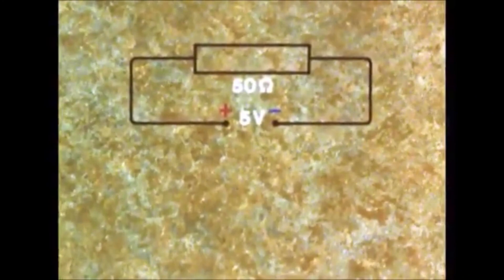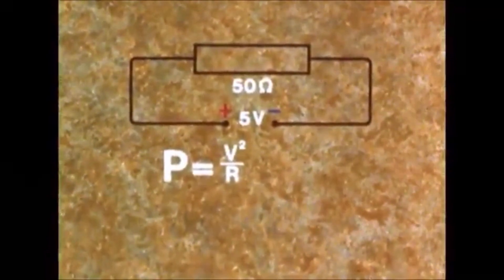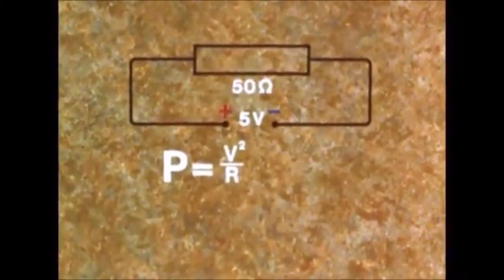Or again, suppose we have a 50 ohm resistor with 5 volts across it. What power is being absorbed? We know R and V, so we use the formula P equals V squared over R to find P. P equals 25 over 50, that is half a watt.